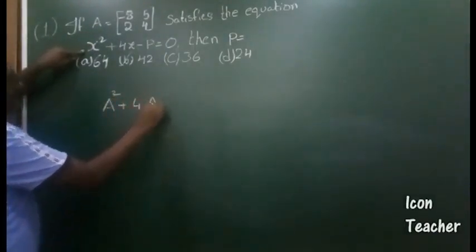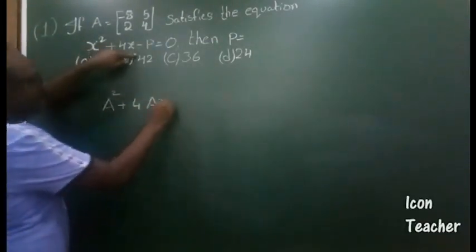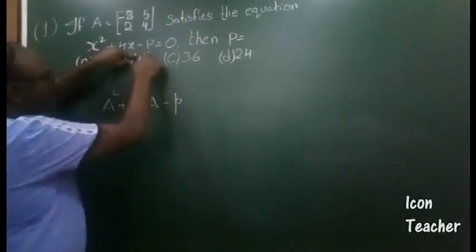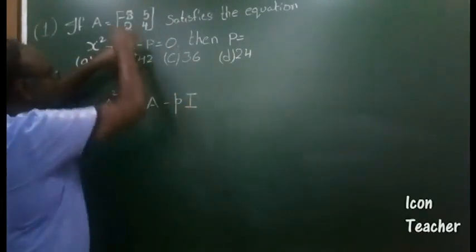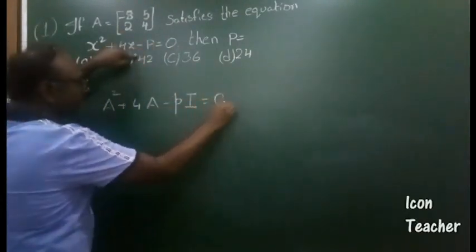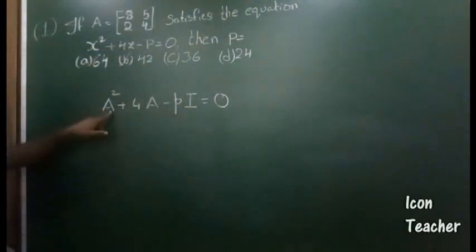4A - pI (plug in x as A). When you have a constant it means p times the identity matrix I of the same order as A. This should be equal to 0, so this becomes A² + 4A - pI = 0.